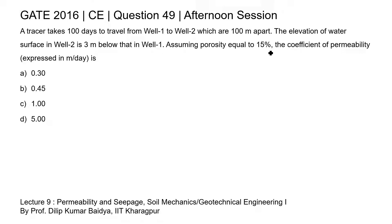Assuming porosity equal to 15%, we need to find the coefficient of permeability. There are two wells, well 1 and well 2, which are 100 meters apart. The water surface in well 2 is 3 meters below that in well 1, creating a head difference. A tracer takes 100 days to travel from well 1 to well 2, and the porosity of the soil is 15%.